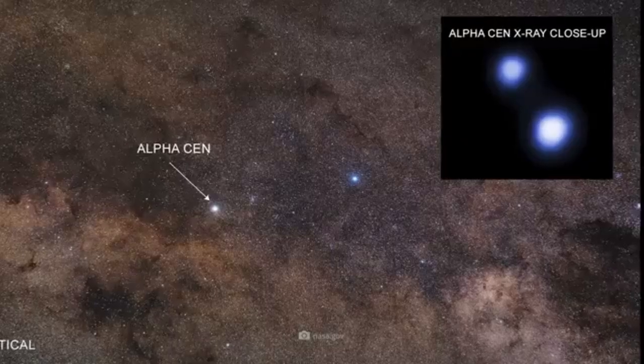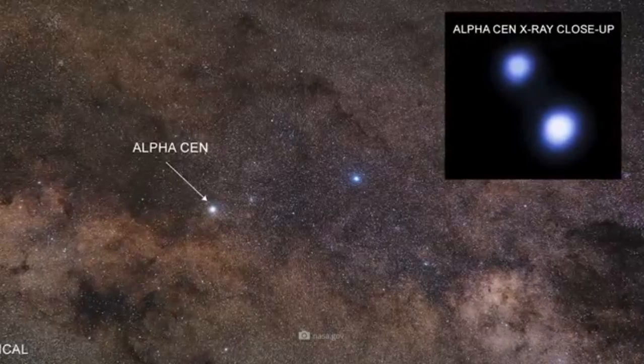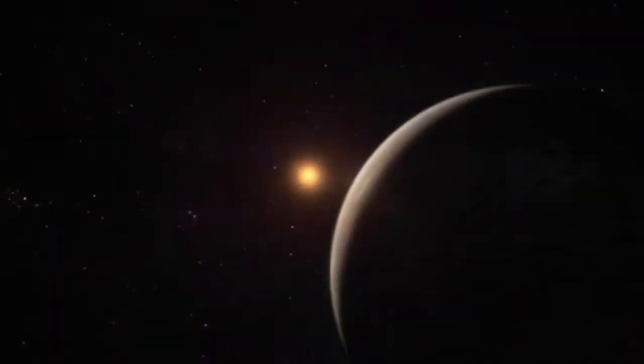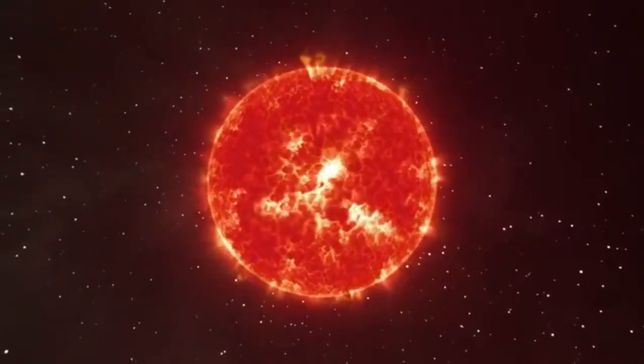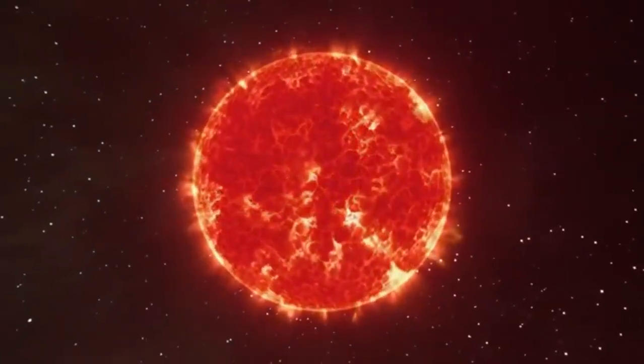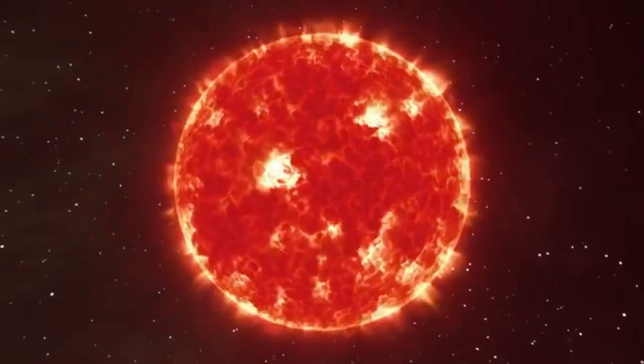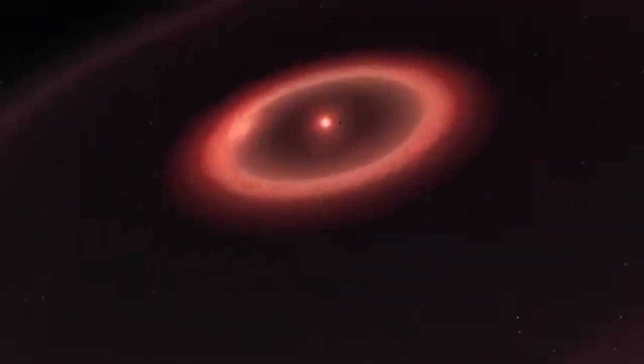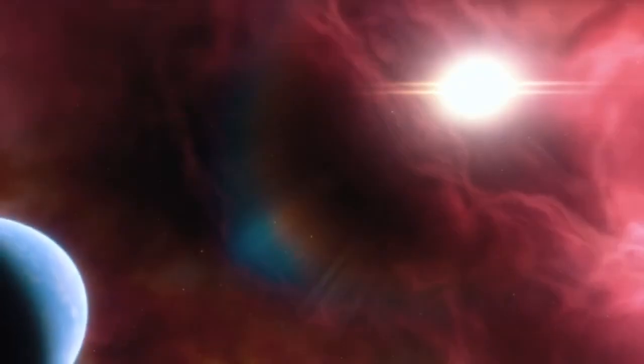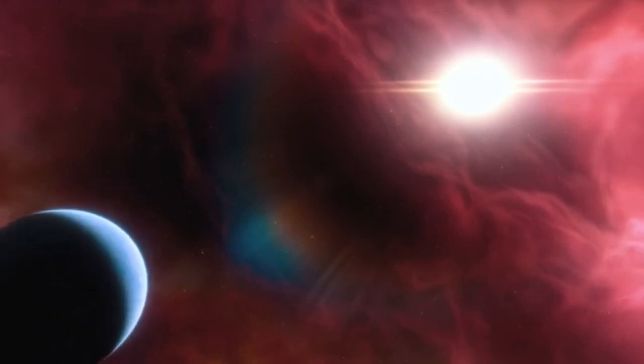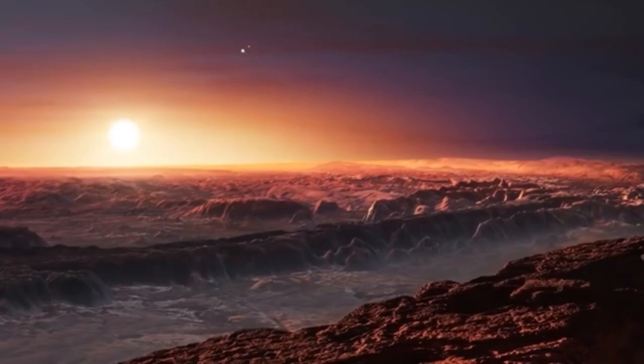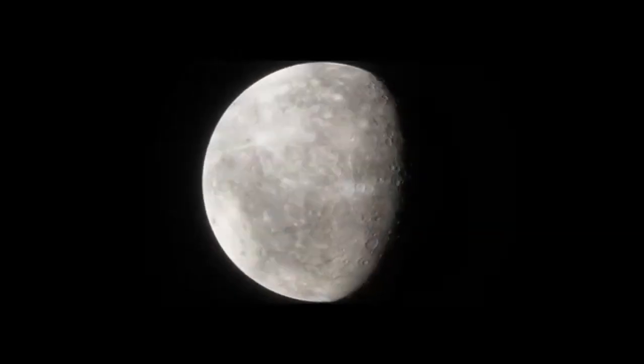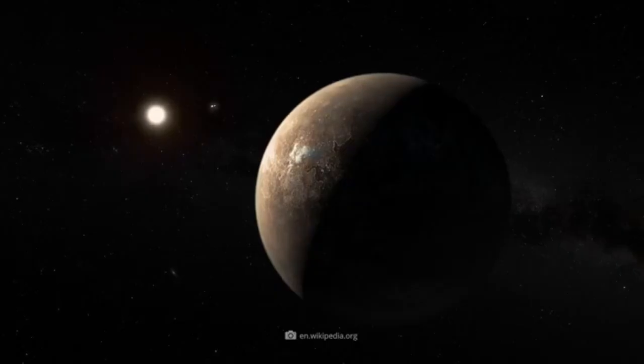The size and mass of a planet are fundamental factors in determining its potential to support life. While the search for habitable planets often begins with identifying those in the so-called Goldilocks zone, where conditions are just right for liquid water to exist, size and mass are equally vital in evaluating whether a planet can actually sustain life over long timescales. A planet that is roughly 10% larger in radius than Earth offers not only increased surface area, but also enhanced environmental diversity.